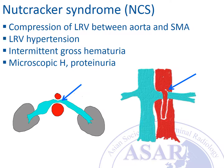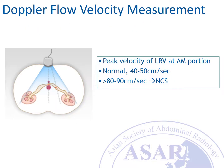Nutcracker syndrome is caused by compression of the left renal vein between the aorta and superior mesenteric artery, resulting in left renal vein hypertension that causes intermittent gross hematuria. Sometimes this syndrome may cause microscopic hematuria or proteinuria instead of gross hematuria. The best way to evaluate the severity of the compression of the left renal vein at the aorta-mesenteric portion is to measure the flow velocity using Doppler ultrasound.